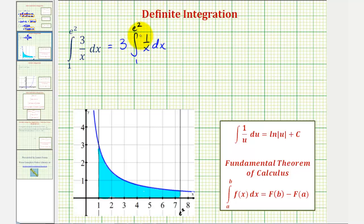The anti-derivative of one divided by x is equal to natural log absolute value of x. But because the limits of integration are both positive, we don't need the absolute value. We can write this as three times natural log x.